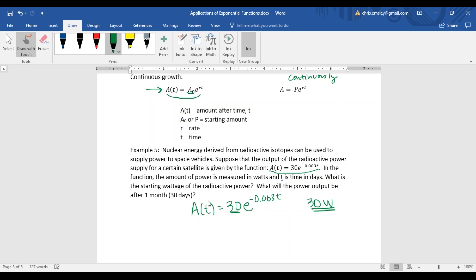What will the power output be after one month? For t, are we going to use 1 or 30? It's important to go back to the problem - it tells us that t is time in days. So we want to use 30 for t when we're asking how much power will be left after 30 days. A of 30 is 30 e to the negative 0.003 times 30 days. 30 goes in for t also.